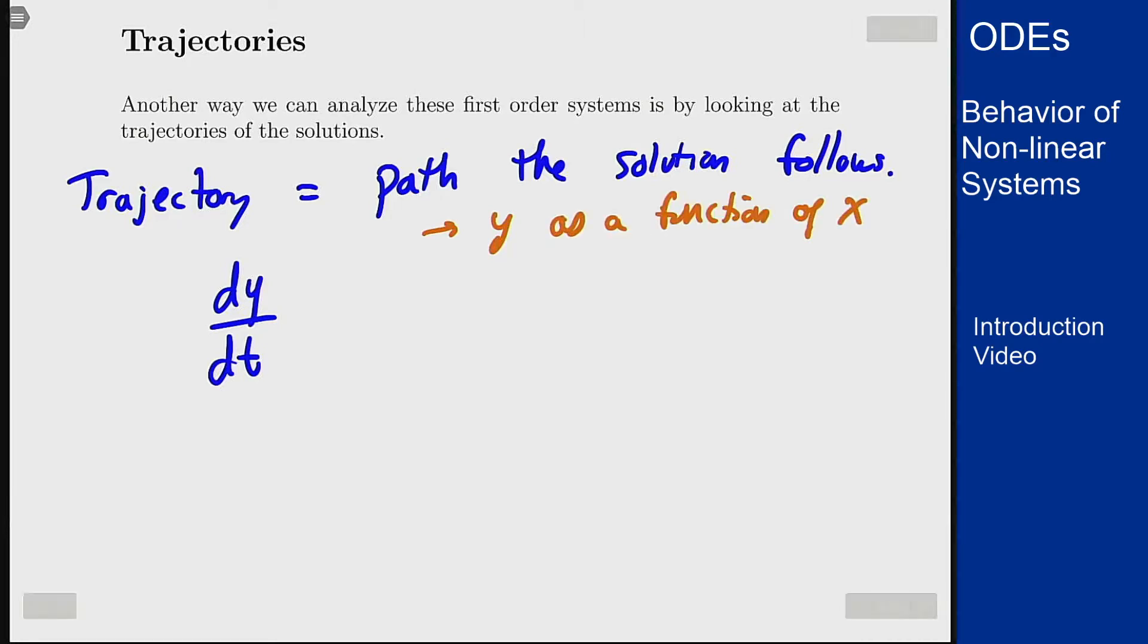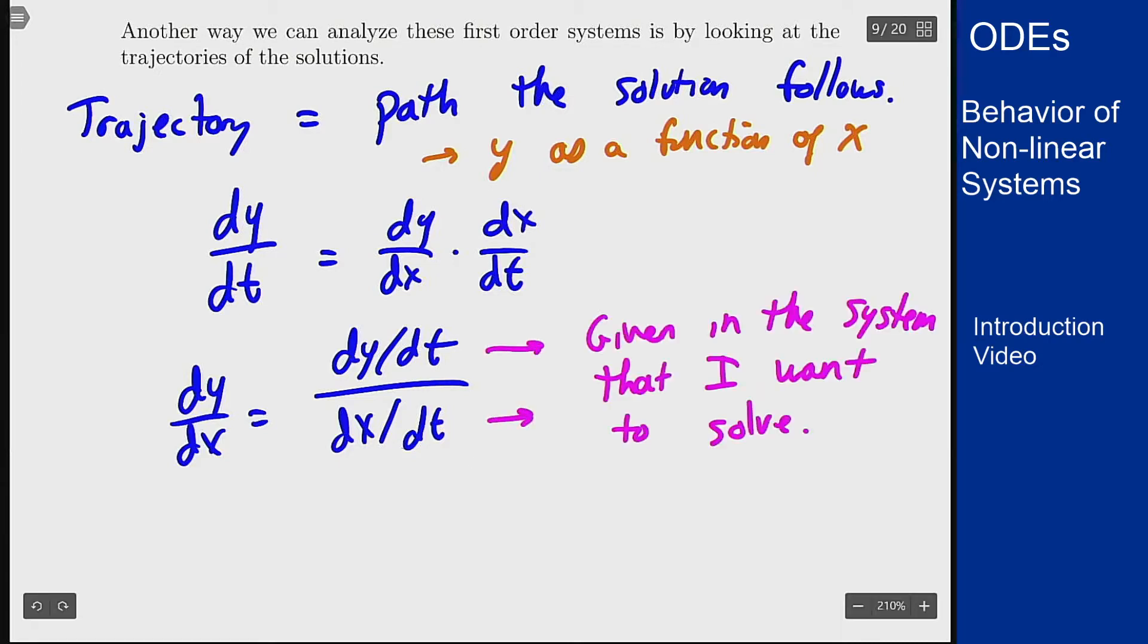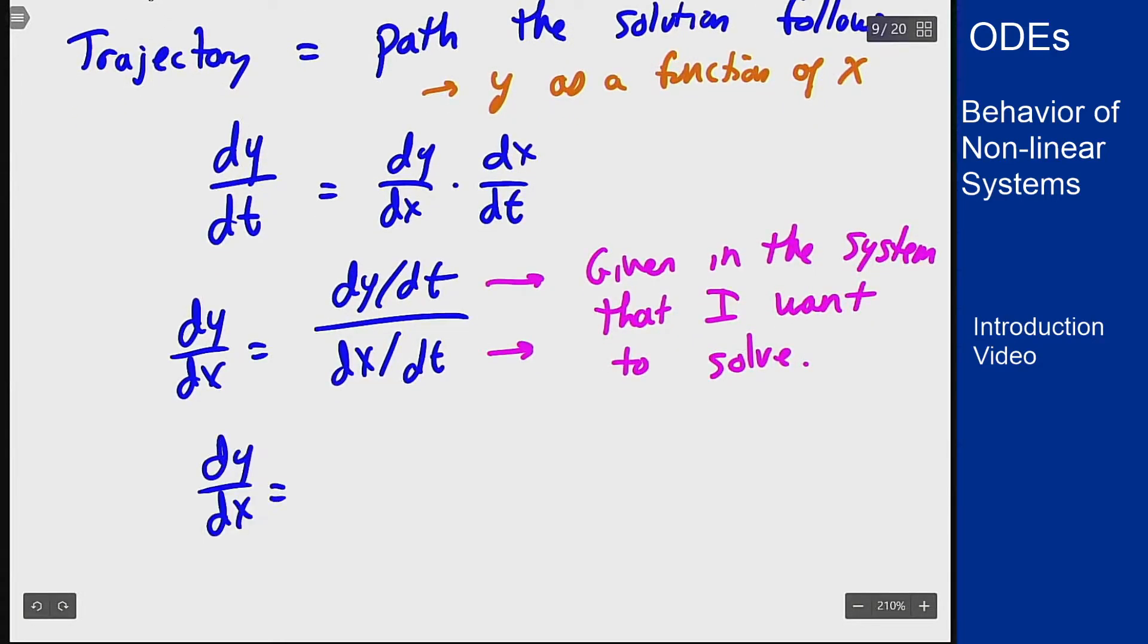Now if I view y as a function of x, I can write dy/dt with the chain rule as dy/dx times dx/dt, which means I can then rewrite dy/dx as the ratio dy/dt over dx/dt. The point here is if I'm solving a two component system, both of these are given to me in the system I'm trying to solve. So what I can do is divide them to get dy/dx and try to solve the first order equation dy/dx equals g(x,y) divided by f(x,y), and that's now a first order equation.